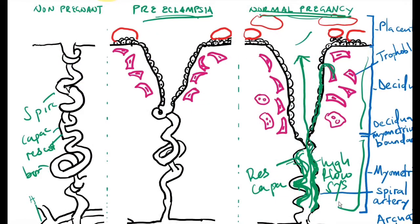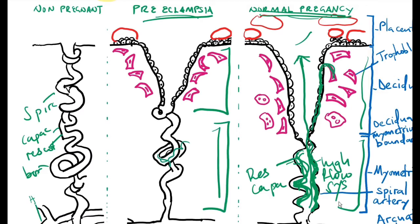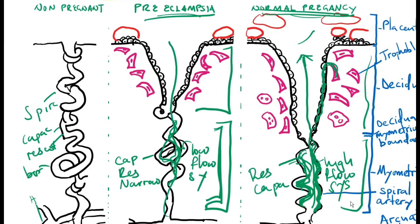What happens in preeclampsia is that the first wave of endovascular trophoblast invasion occurs up to the decidual segment only. However, the second wave that should occur in the myometrial segment does not occur, so there is no trophoblast invasion of the spiral arteries in the myometrial segment. The spiral arteries therefore retain some of their pre-pregnancy characteristics — being low capacitance, high resistance, and narrow bore — resulting in a low-flow system and impaired perfusion to the fetal placenta unit.